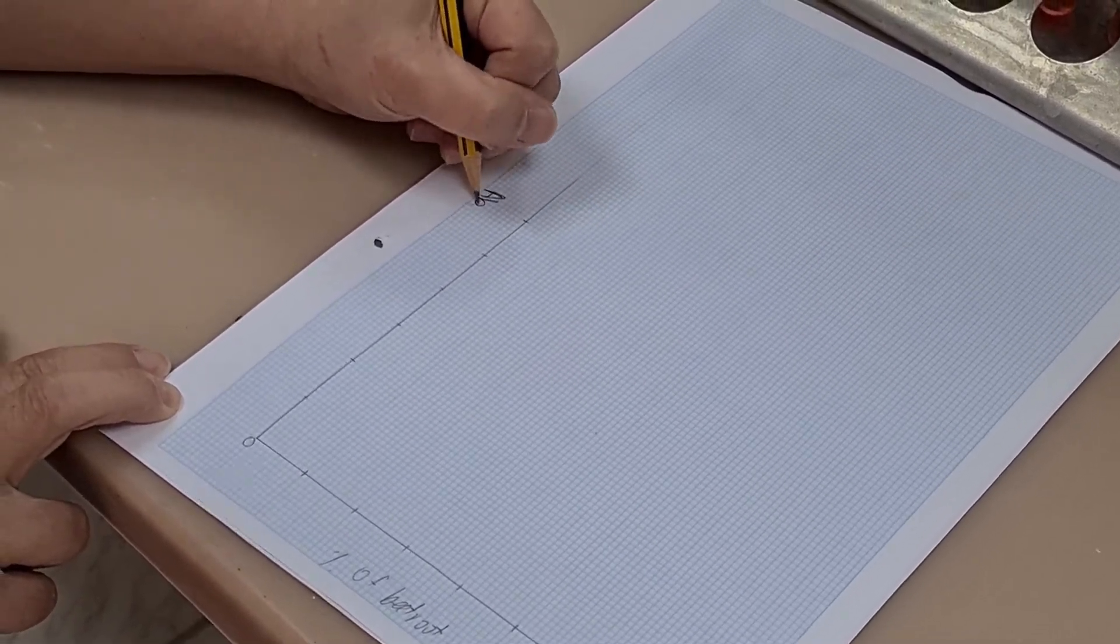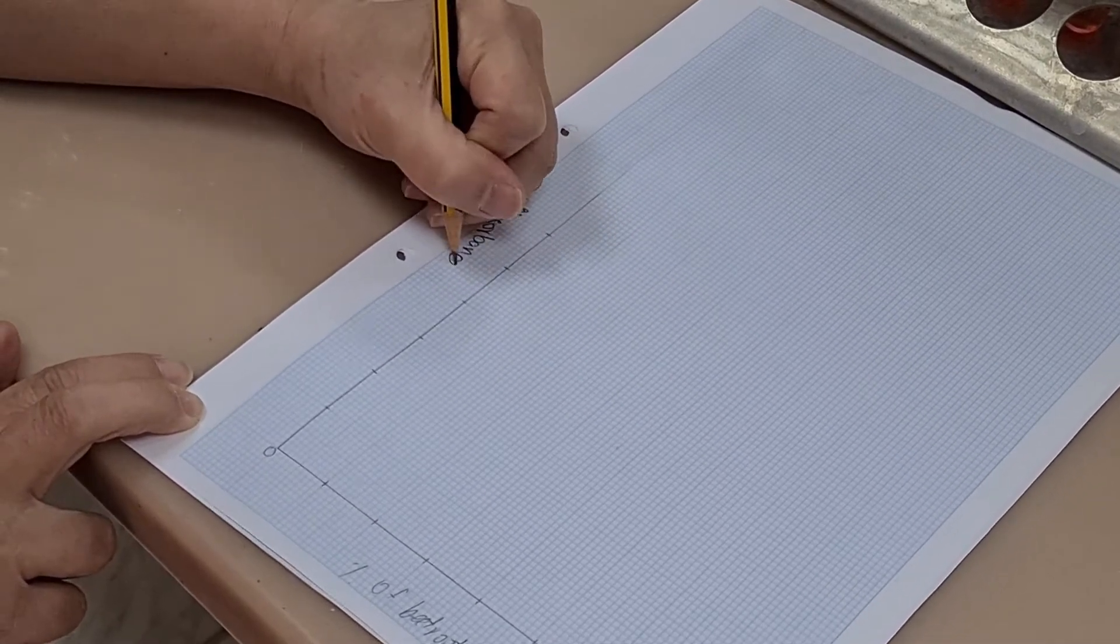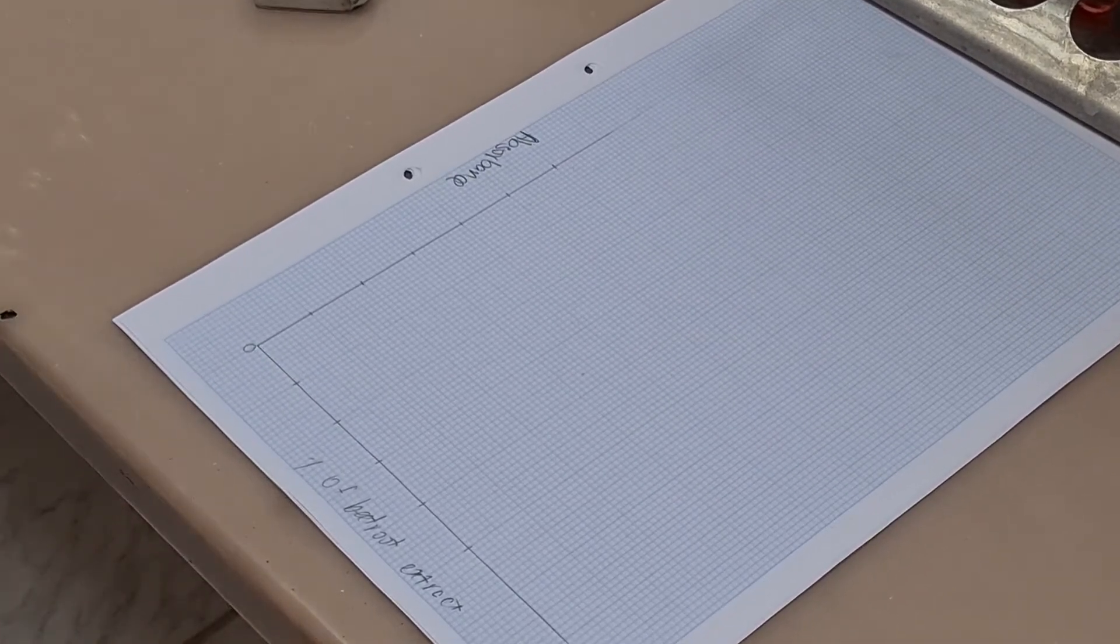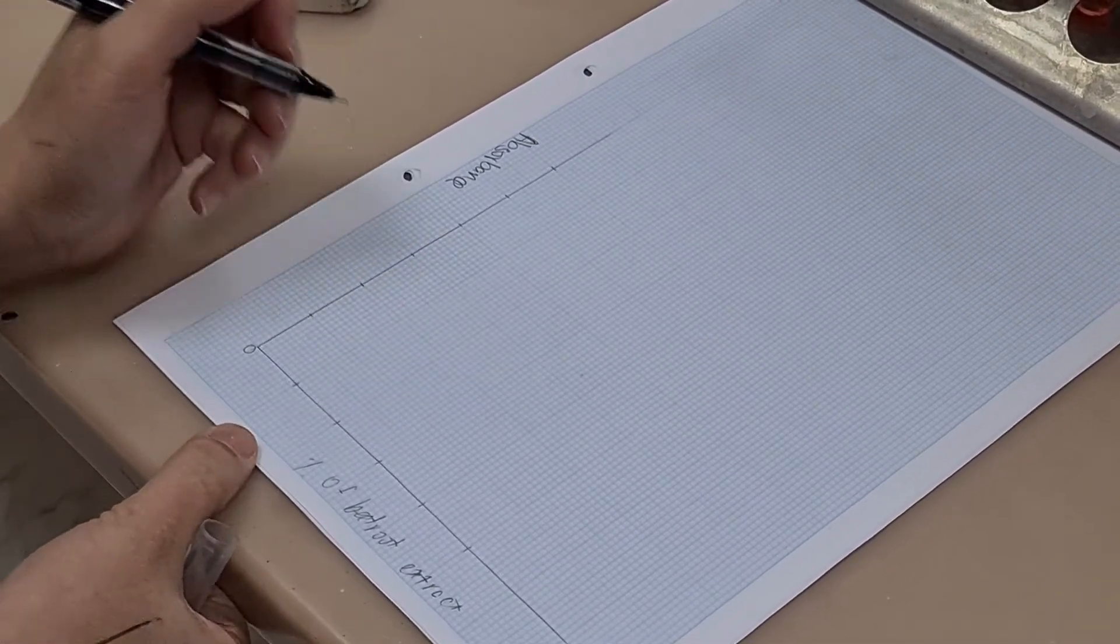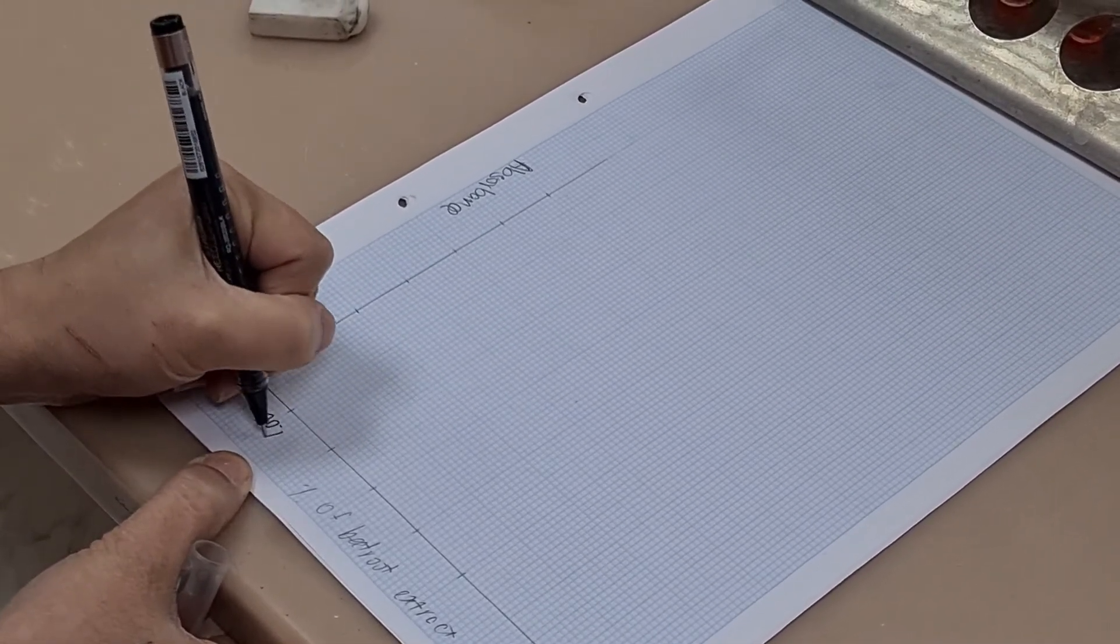Then you would take that figure across to your graph. You would go up the y-axis, find where that absorbance corresponded to, take a line across to the graph and then read down to the concentration of beetroot extract, which would be on your x-axis.